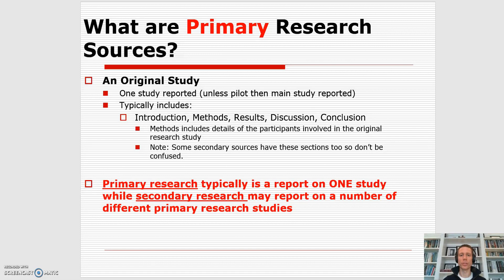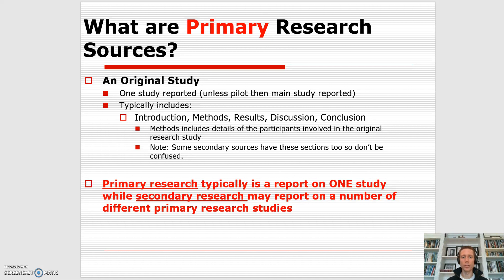So what is a primary research article or primary research source? Typically what you're going to be looking for is this is a report on one study that was conducted. You will typically see an introduction, methods, results, a discussion, and a conclusion. They'll talk about participants in that method section, as well as the sampling methods. A primary research article is typically a report on one study, while a secondary research report or article is going to be discussing multiple different primary research articles.